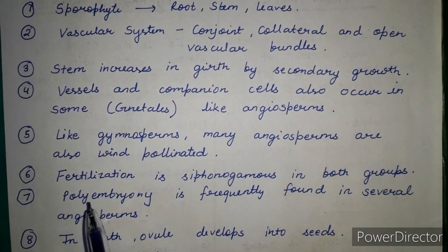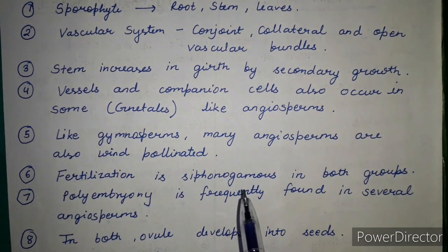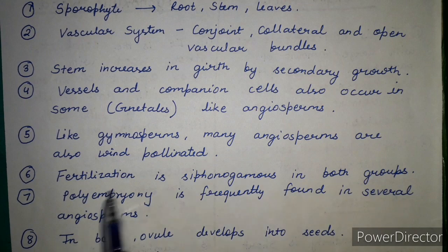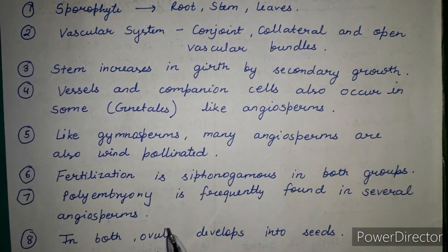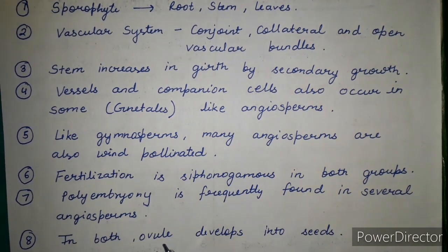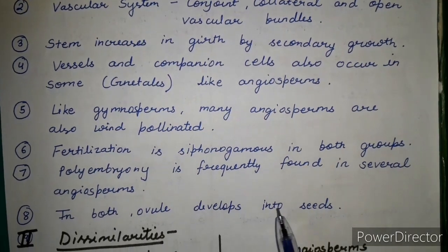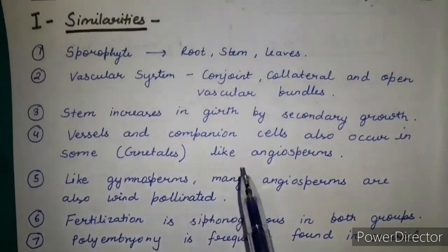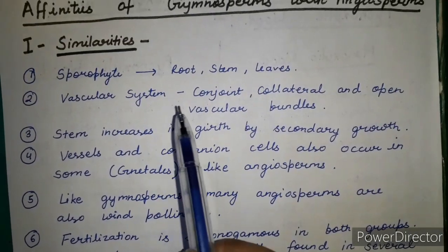Polyembryony is frequently found in several angiosperms. In both gymnosperms and angiosperms, ovules develop into seeds. These are the main similarities between gymnosperms and angiosperms.